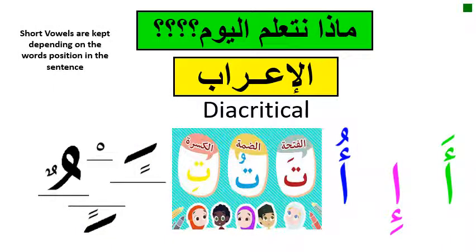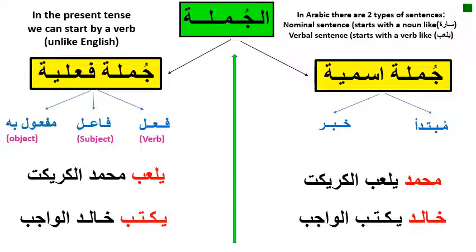السلام عليكم ورحمة الله وبركاته. Today we are going to learn about إعراب, which means diacritical vowels — specifically short vowels. Sometimes we see dhamma, kasra, or fatha on some words. Short vowels are kept depending on the word's position in the sentence. Let's start.